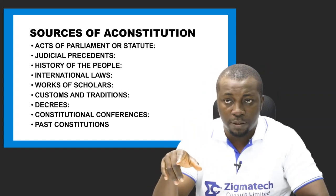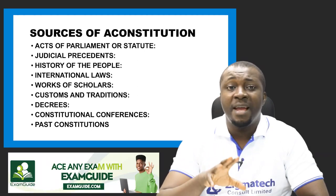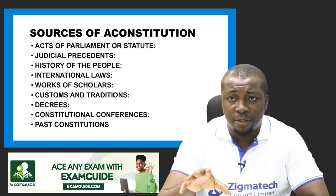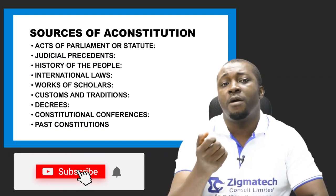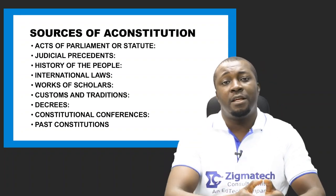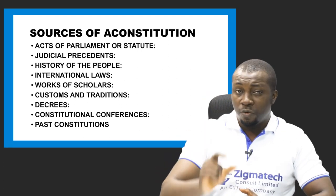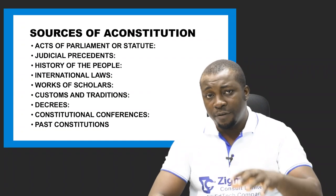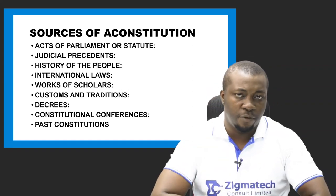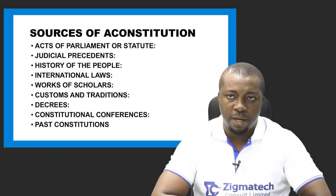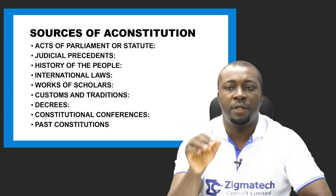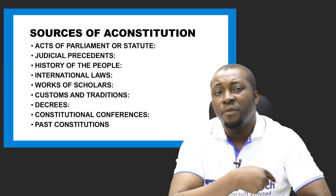The second source is judicial precedents or court rulings. These are the pronouncements of higher courts, especially the Supreme Court. Over the years, these rulings have acquired the status of law because lower courts are expected to follow the rulings of higher courts in similar cases. Relevant judicial precedents can be made part of the constitution. The history of the people can also be a source of the constitution.